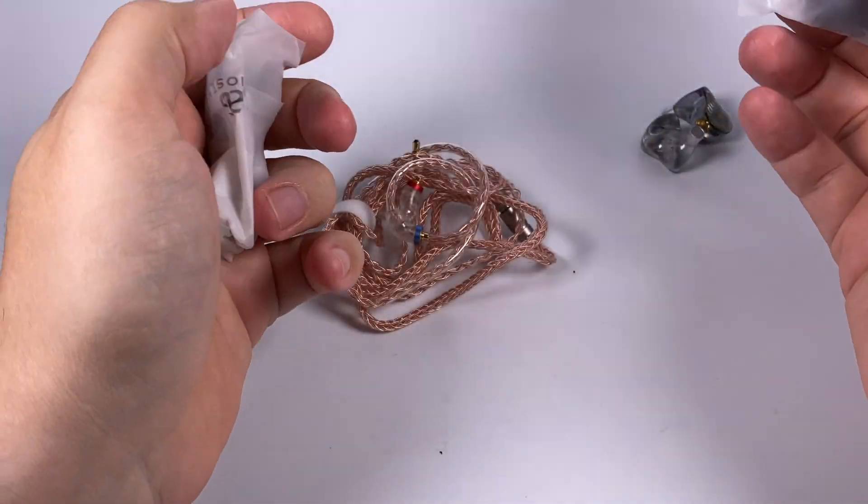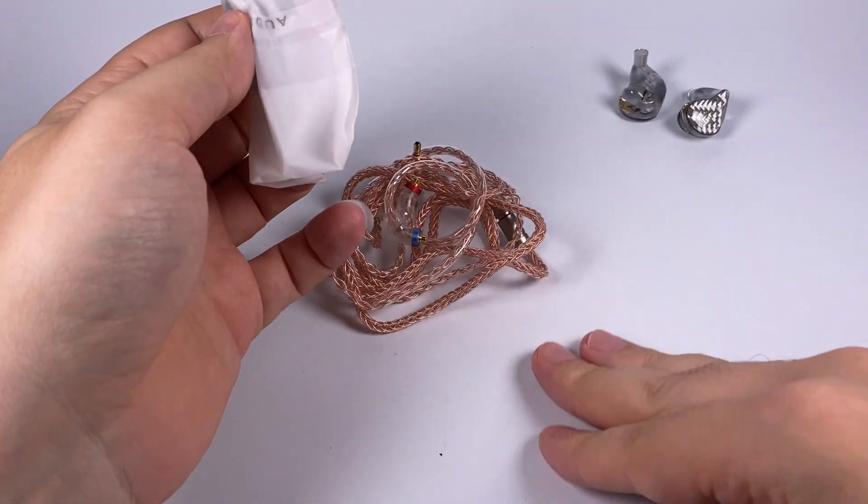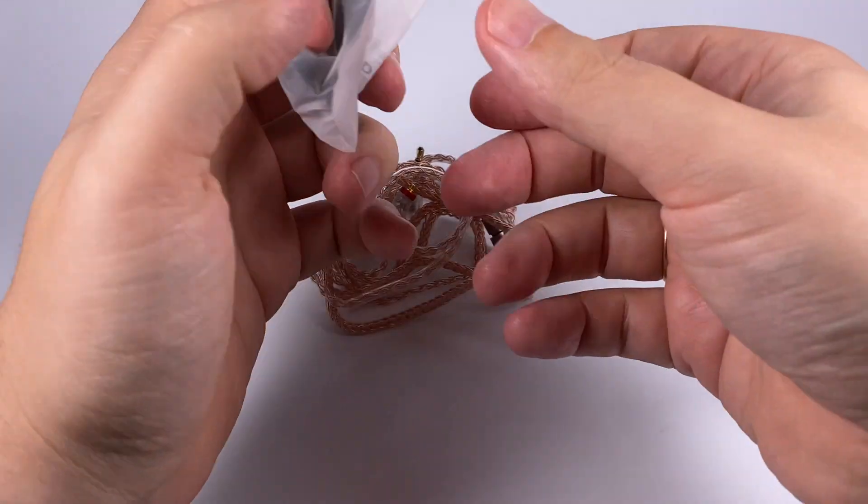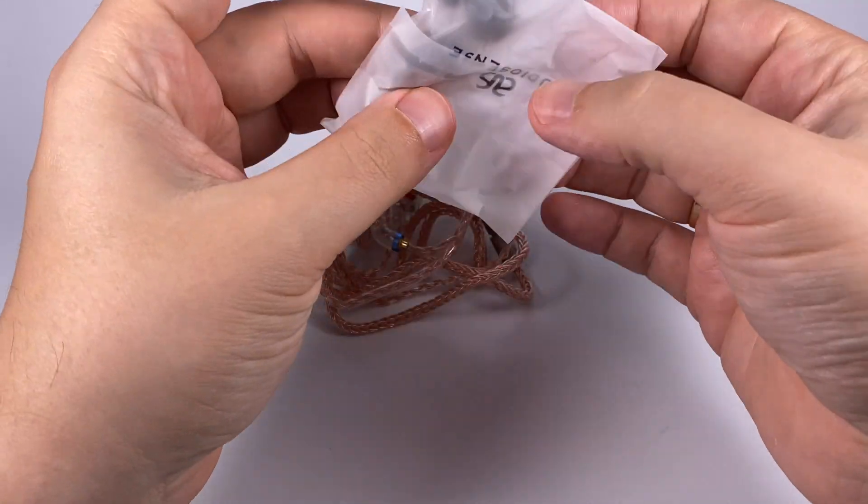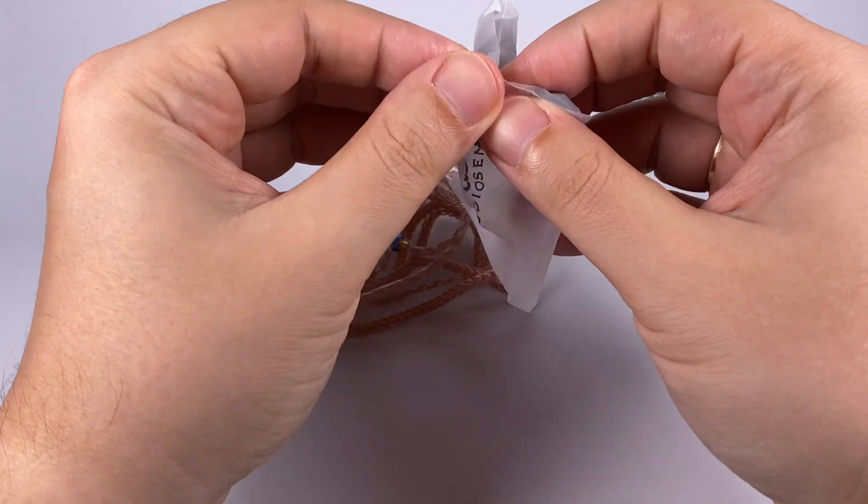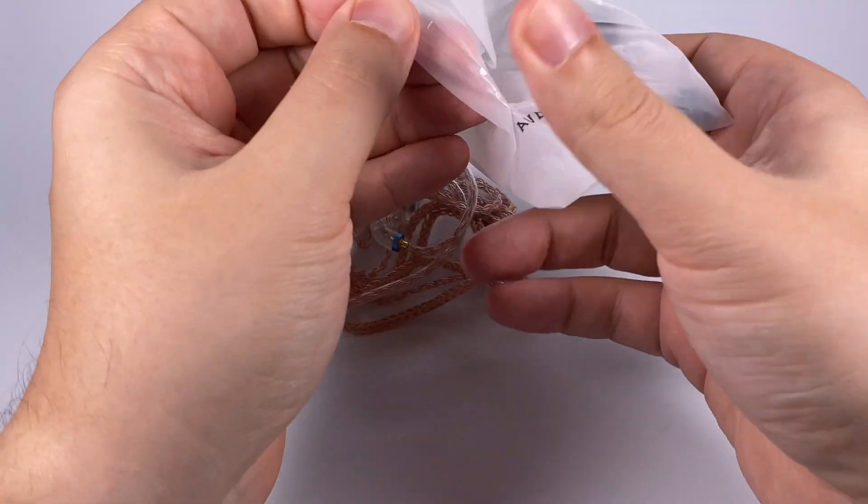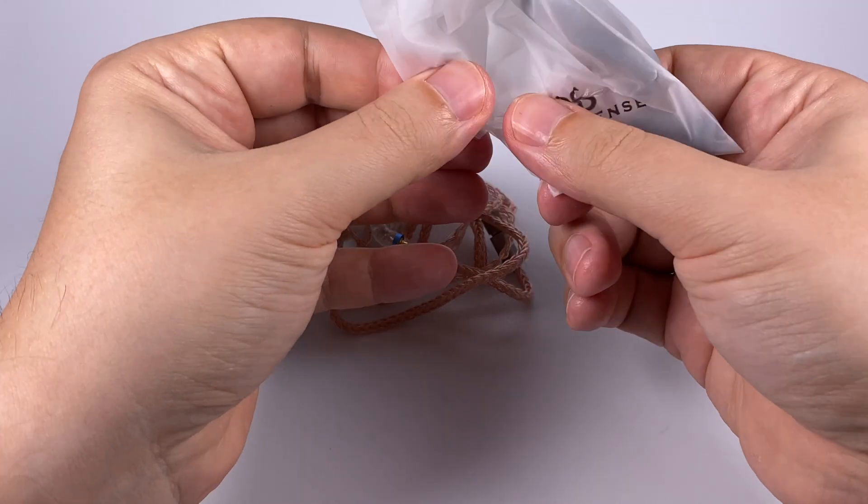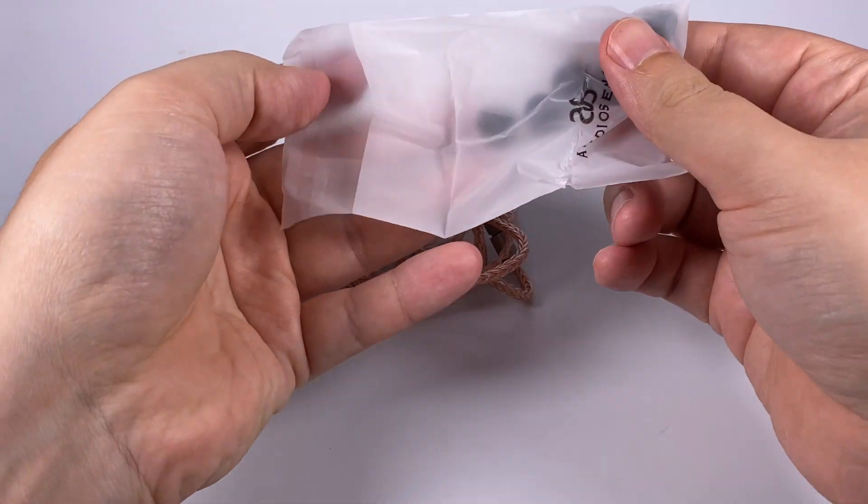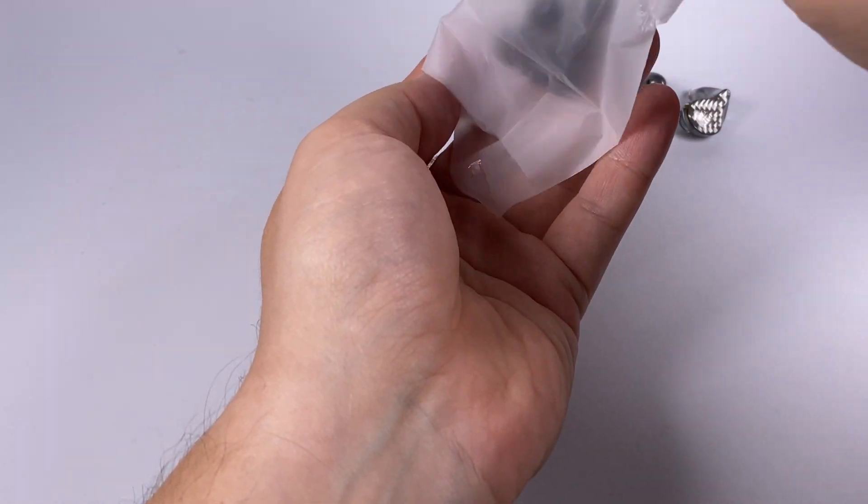So earpieces themselves, and here in the box set of accessories. Three pair of foam tips, and three pair of silicone tips. In this price range that probably can be considered as a normal set of accessories.